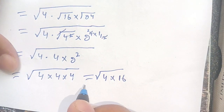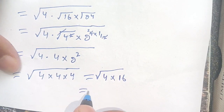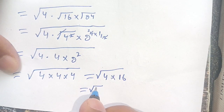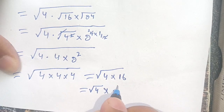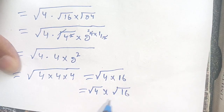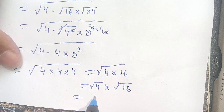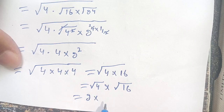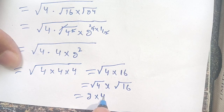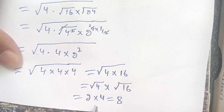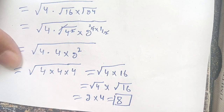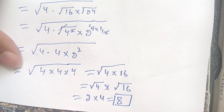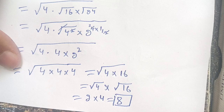Now in the next step we can write it as square root of 4 times square root of 16. Square root of 4 is equal to 2, and square root of 16 is equal to 4, so the answer is equal to 8. If you are new here, make sure to subscribe to our channel for more informative videos. See you in the next video, bye!